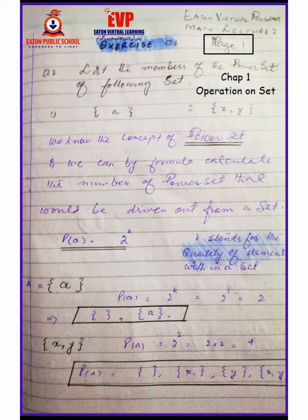So the power set has a quantity of 2 — one empty set and one containing A. In the second example, there are two elements in the set. Applying the formula 2 raised to k, that would be 2 raised to 2, which equals 4. So there are 4 power sets in total.